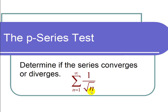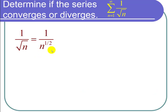This may not look exactly like a p-series because it doesn't look like we have a power of n on the bottom, but we really do because we can rewrite the square root of n as n to the 1/2 power. And then it really is a p-series.